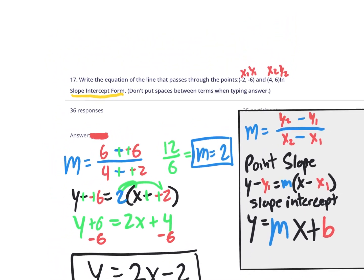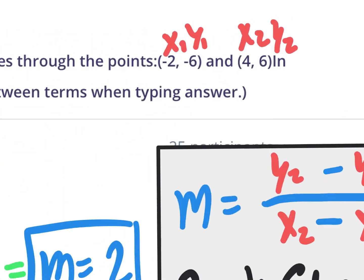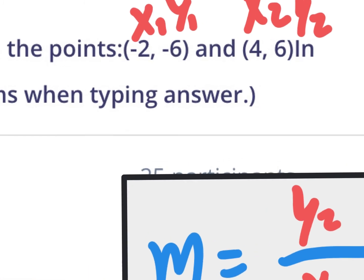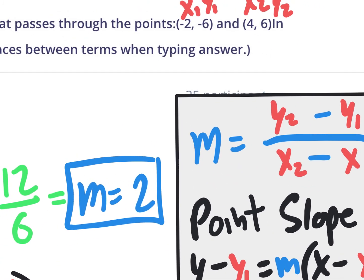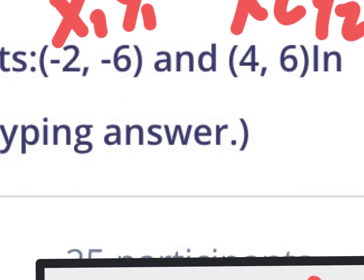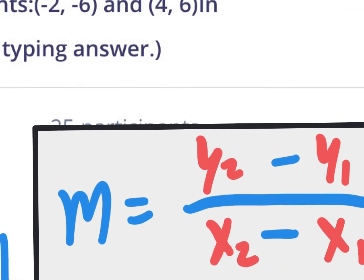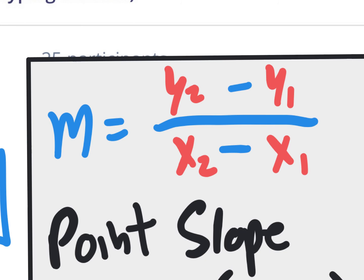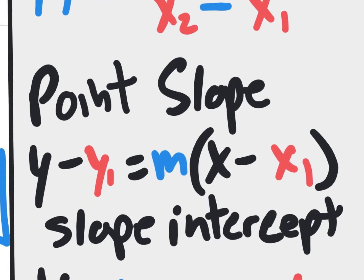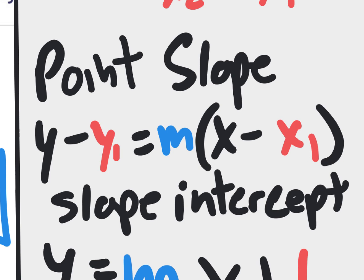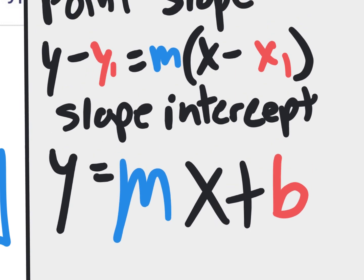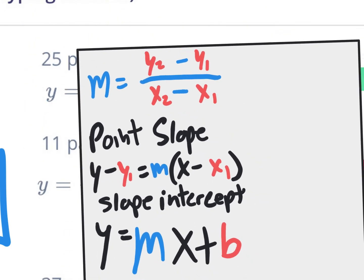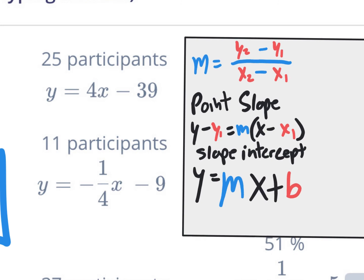To summarize: we started with points negative 2, negative 6 and 4, 6. We used the slope formula to find the slope. Once we had the slope and one point, we plugged it into point-slope form. Then, because they asked for slope-intercept form, we distributed the m and isolated y to get y equals mx plus b. This question requires everything from these two sections.